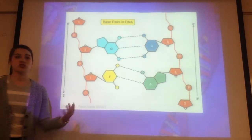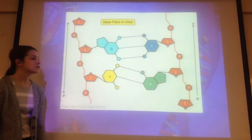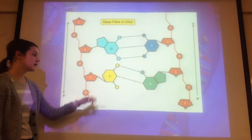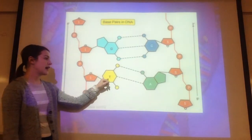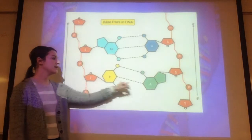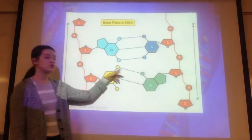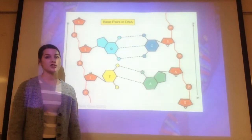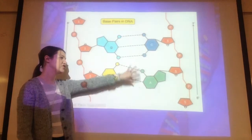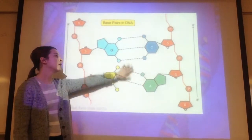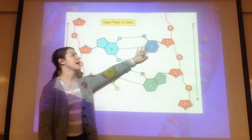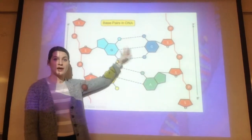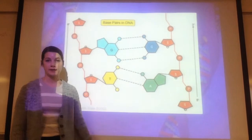This picture is showing just that. You can see the hydrogen bonds here — thymine and adenine connected by two dotted lines representing two hydrogen bonds, and guanine and cytosine connected by three hydrogen bonds.